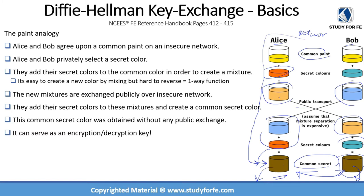The network has never been able to see this new color that both of them produced locally. Without telling each other, they both know this new color is the key. This is the most critical component: it was developed without any public exchange, and it can serve as the encryption and decryption key. The protection is provided by means of the one-way function — when the new mixtures are exchanged, even if intercepted, you cannot break them into the original colors.